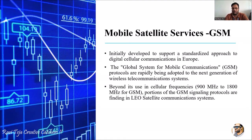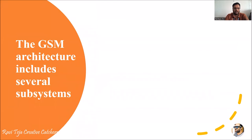GSM protocols operate via a satellite system called LEO satellite — Low Earth Orbit. We have already seen LEO, MEO, and GEO: Low Earth Orbit, Middle Earth Orbit, and Geostationary Orbit. GSM cellular mobile communications operate with respect to the LEO satellite system. Since LEO is very near to the Earth and ground stations, there will be point-to-point communication and the signaling will be very good and proper.